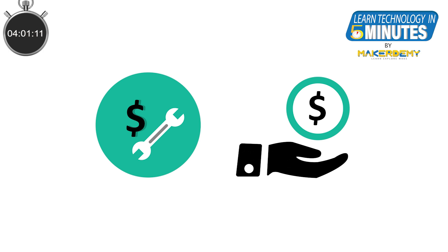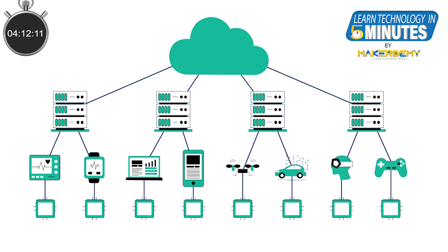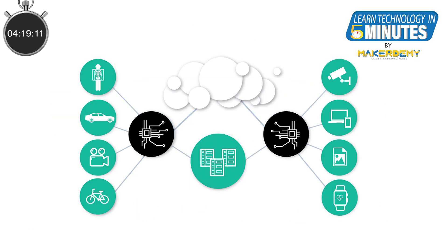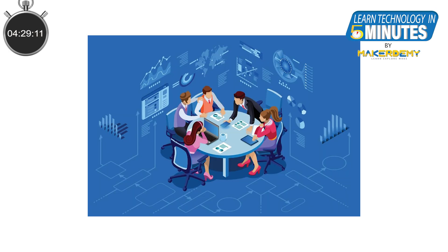Another disadvantage is the maintenance and investment cost. Implementing an edge infrastructure can be costly and complex due to the need for additional equipment and resources. Furthermore, edge networks require higher maintenance costs than a centralized infrastructure. As edge computing can only process and analyze partial sets of information, companies may end up losing lots of valuable information. Thus, organizations must decide what type of information they are willing to lose.